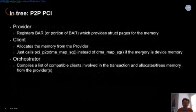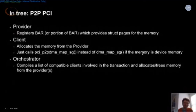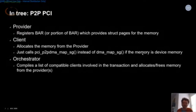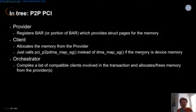There are three constructs: a provider, which registers their resource; a client, which allocates the memory via an API call; and an orchestrator, which can orchestrate the transaction if you have multiple paths to a target on a large system. You would call PCI_P2P_DMA_MAP_SG instead of the standard DMA_MAP_SG if it's device memory. Memory is always pinned. This works well for the specific NVMe fabrics use case it was added for, but not for many other use cases.